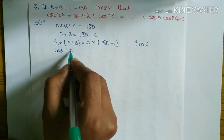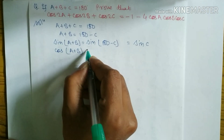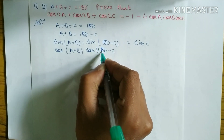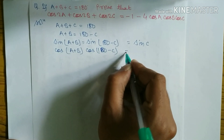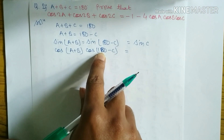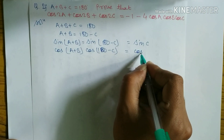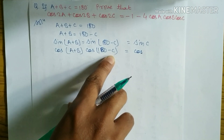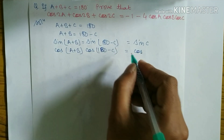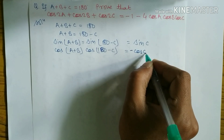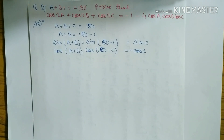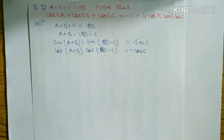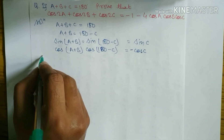Cosine of both sides: cos(A+B) equals cos(180 minus C). Now 180 minus C means the second quadrant, and cosine is negative in the second quadrant, so we write minus cos C. Therefore cos(A+B) equals minus cos C.